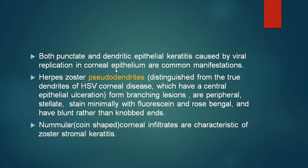Herpes zoster ophthalmicus may have both punctate and dendritic epithelial keratitis. However, the dendrites in herpes zoster are called pseudo-dendrites because they do not resemble the typical dendrites of herpes simplex keratitis. They form branching lesions that are more peripheral, stellate, and stain minimally with fluorescein and rose bengal. They do not have the classical knobbed ends but are blunt at their tips. There may also be nummular or coin-shaped corneal infiltrates in herpes zoster keratitis.